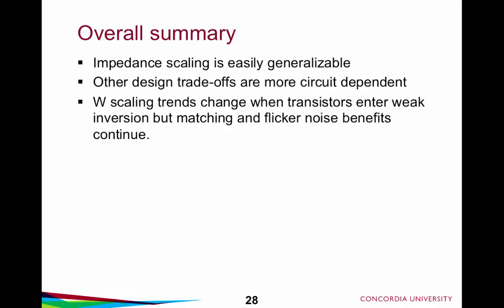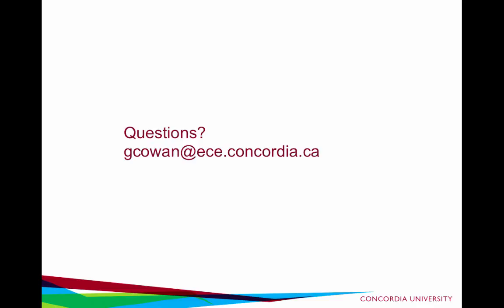To summarize all of this discussion of scaling: impedance scaling is the most easily generalizable — with one set of assumptions, we can talk about any circuit. Other design trade-offs are more circuit-dependent, but we see trends for all circuits with gains related to GM·RO. We can fairly quickly consider width-only scaling and width-plus-length scaling. Other types of scaling can be viewed as combinations — scaling only the current is a combination of impedance scaling and then width scaling. All width scaling trends change when transistors go into weak inversion, but the matching and flicker noise benefits continue. Thank you for your attention; please send questions or comments to gcowen@ece.concordia.ca.